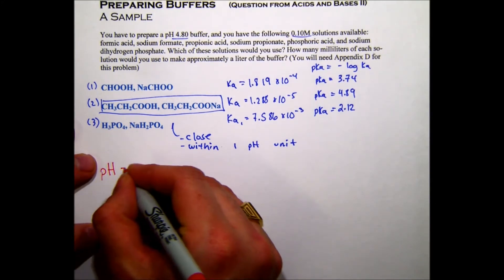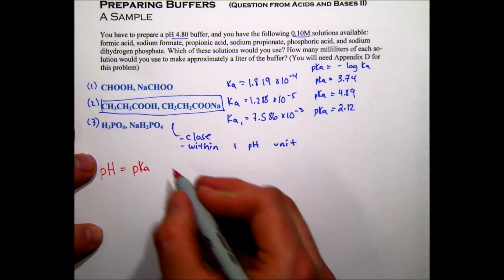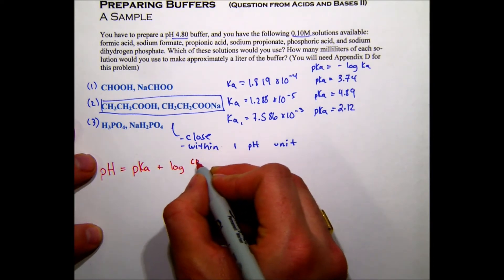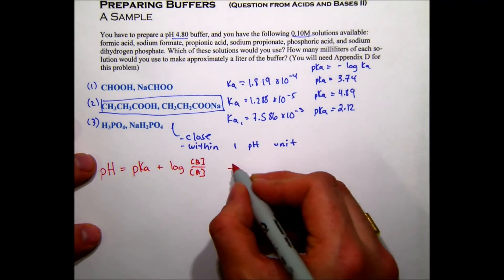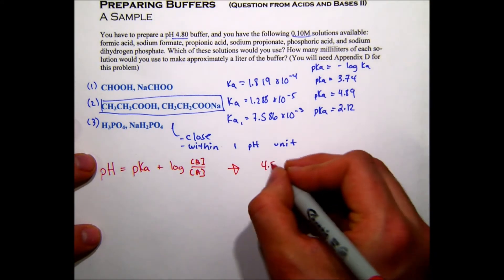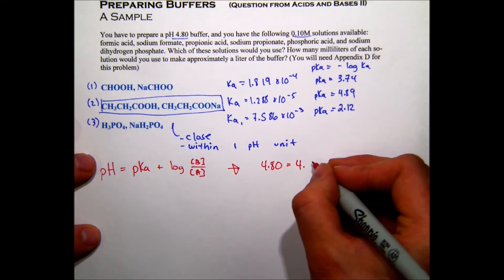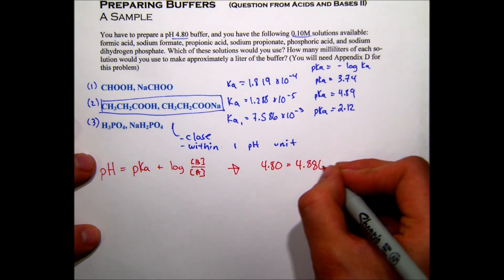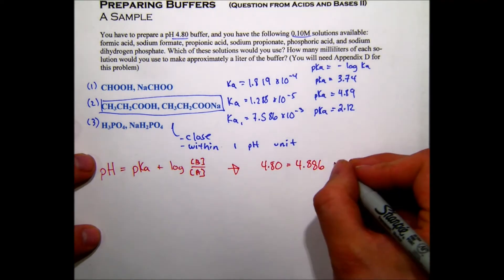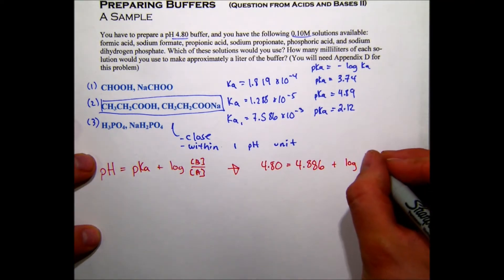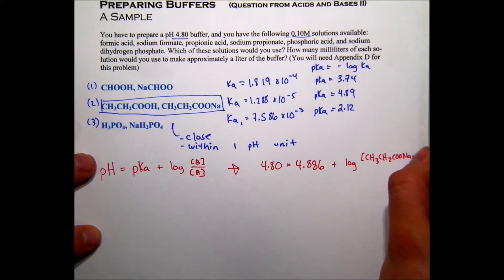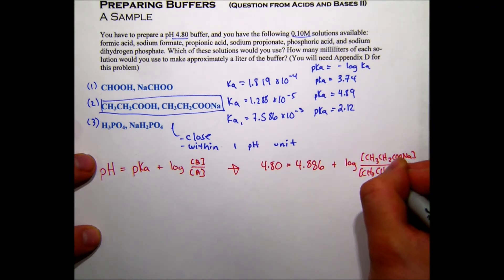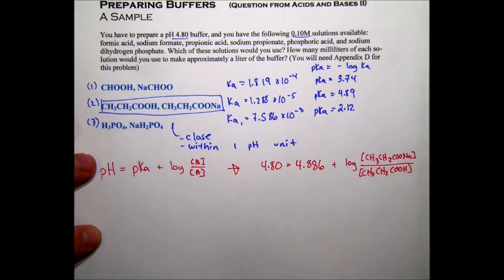So I'm just going to add pH equals pKa plus the log of the base over the acid. So for our scenario, the desired pH of 4.8 equals pKa of 4.886 plus the log of CH3CH2COONa over CH3CH2COOH. So that pair.